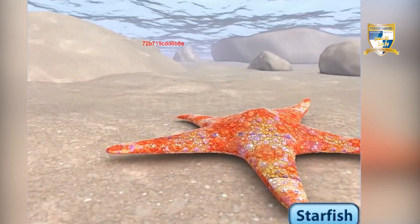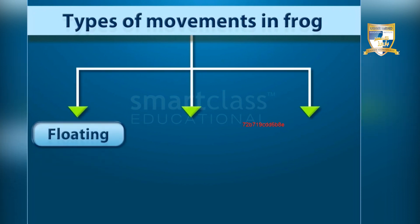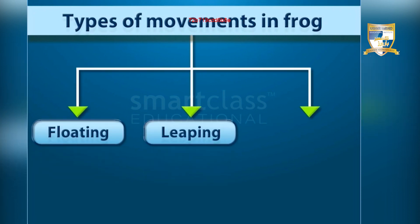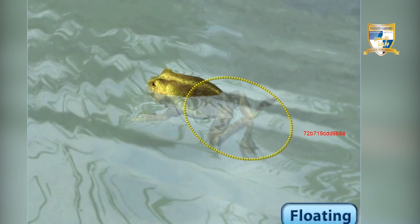Animals such as frogs show various kinds of movements, including floating, leaping, and swimming. During floating, frogs simply float on the water surface without applying force. The eyes, mouth, and nostrils remain above water while the rest of the body is submerged.